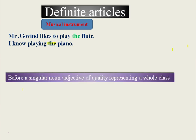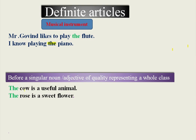We use the definite article before a singular noun or adjective of quality representing a whole class. 'The cow is a useful animal' — cow is a singular noun, but using 'THE' before it represents the whole class of cows. Similarly, 'The rose is a sweet flower' — the definite article before the singular noun 'rose' represents the whole class of roses.